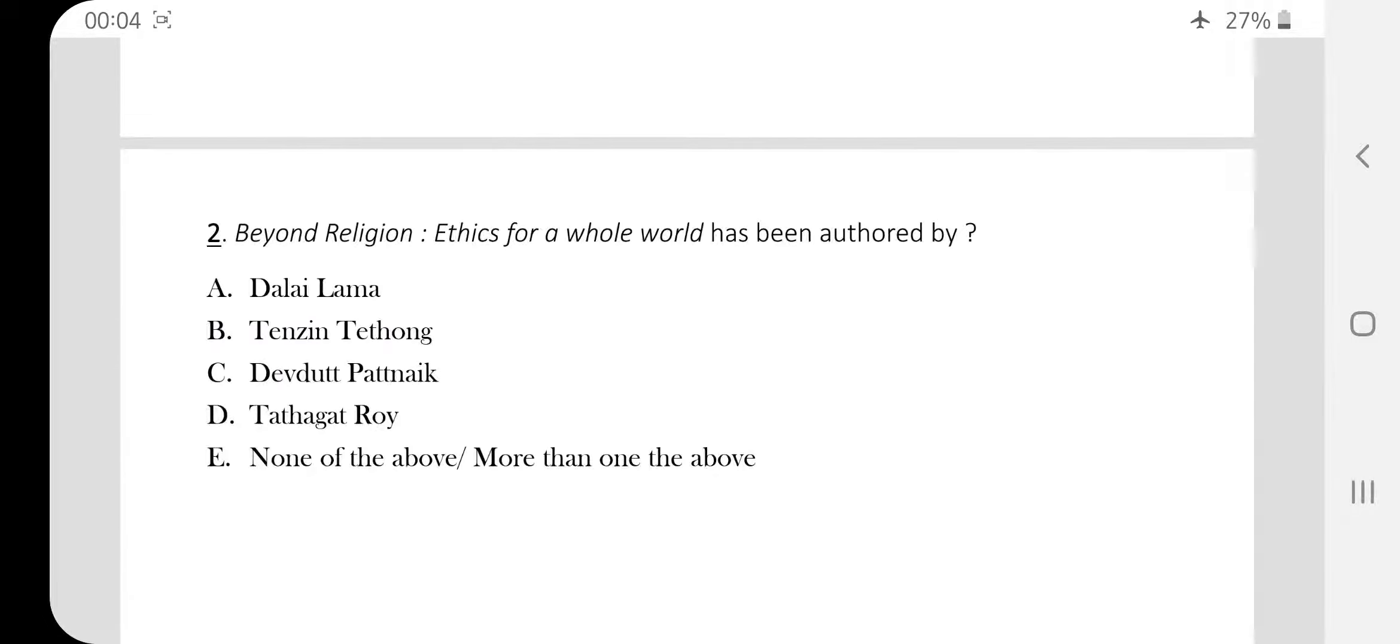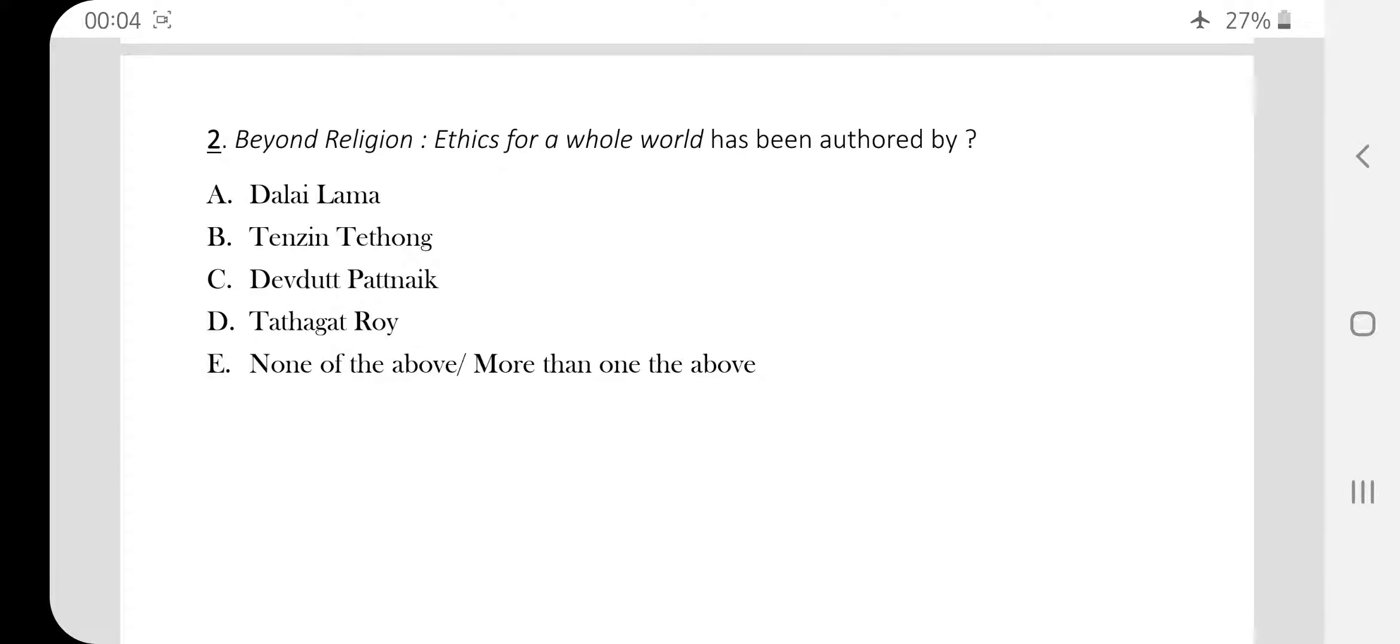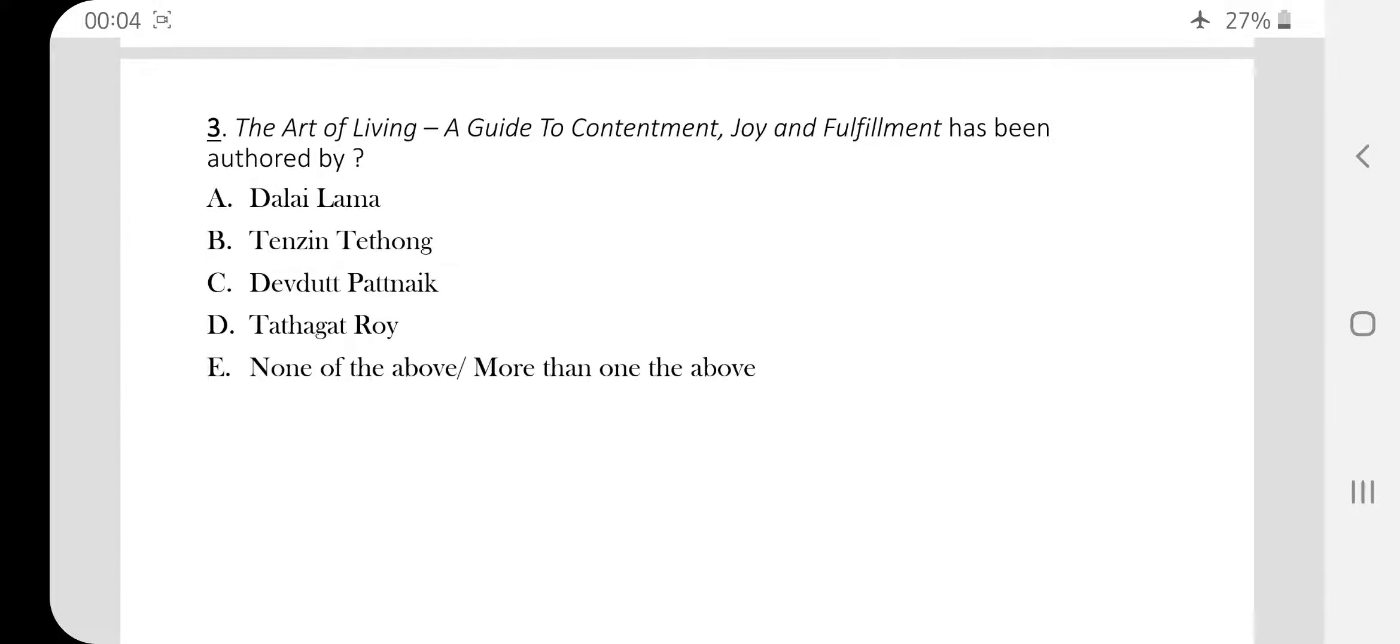Question number two. Beyond Religion, Ethics for a Whole World has been authored by. So the author of this book is option A, Dalai Lama. Question number three. The Art of Living, A Guide to Contentment, Joy and Fulfillment has been authored by. The answer is option A, Dalai Lama.